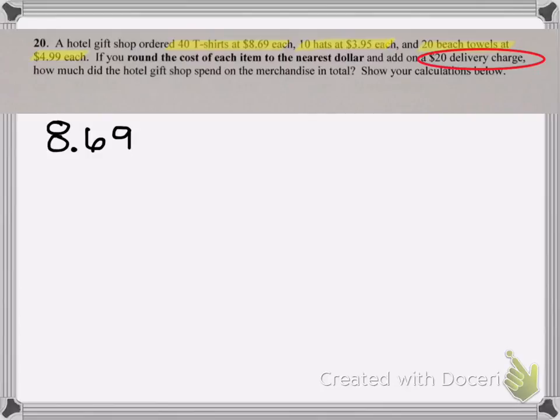The t-shirts cost $8.69 each. If I want to round to the nearest dollar, I'm going to round to the number in the ones place. So that means I'm looking at the eight, but then I look to one digit to the right at the critical digit, which is a six. That means that my eight rounds up to $9.00.